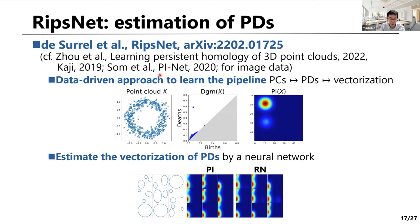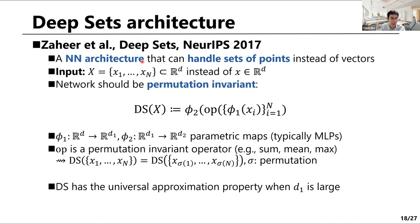I should remark that for image data, there is similar work by other groups. Moreover, at almost the same time, a very similar work appeared that runs persistent homology on 3D point clouds, and this is a really hot topic.